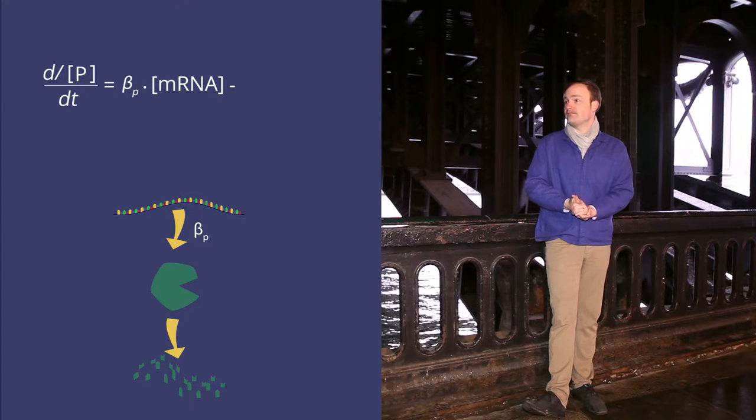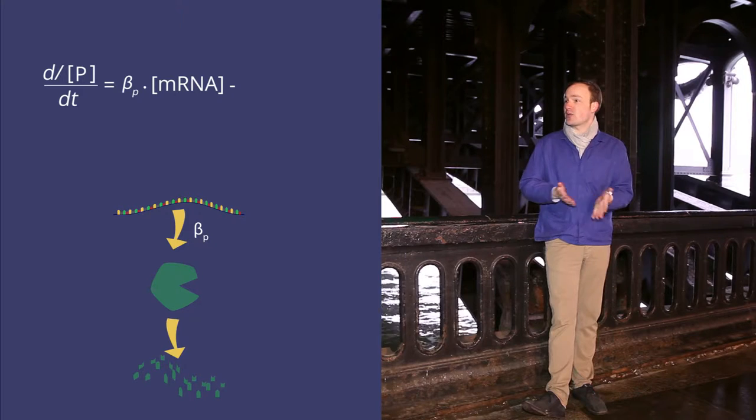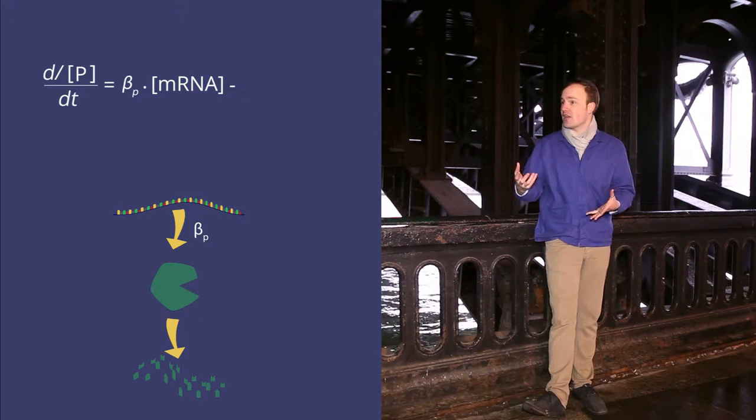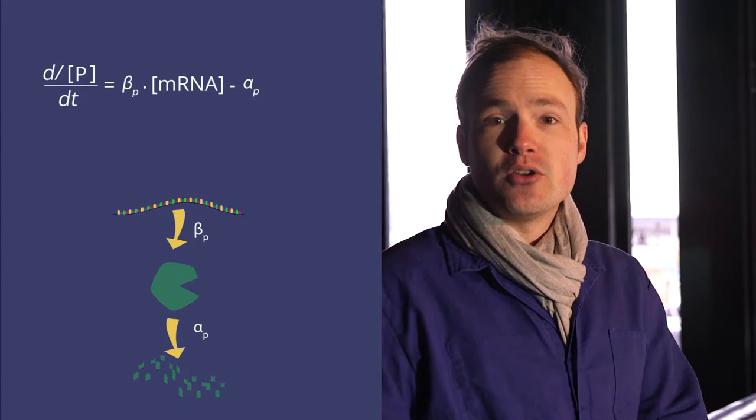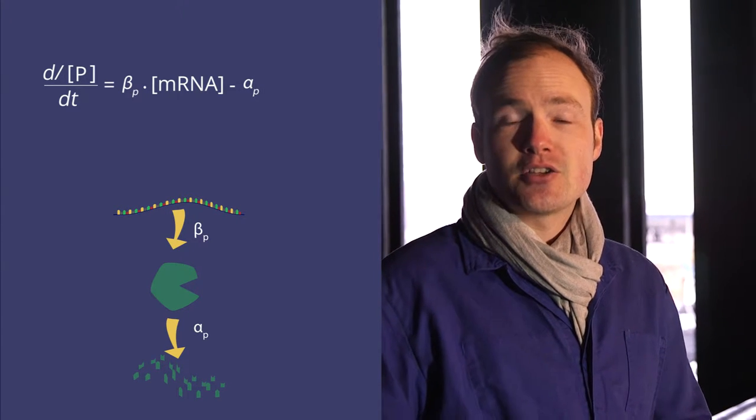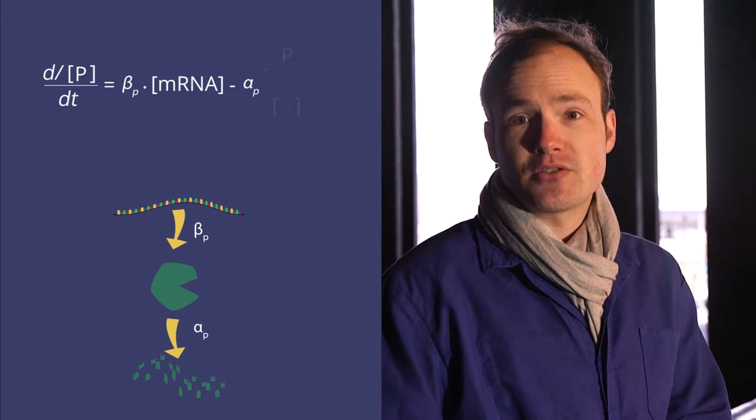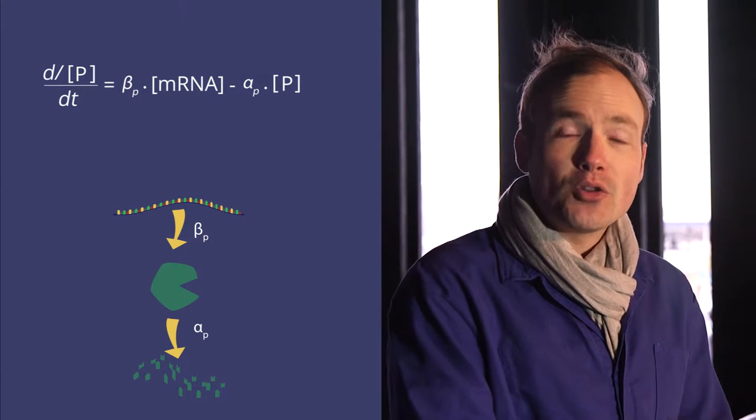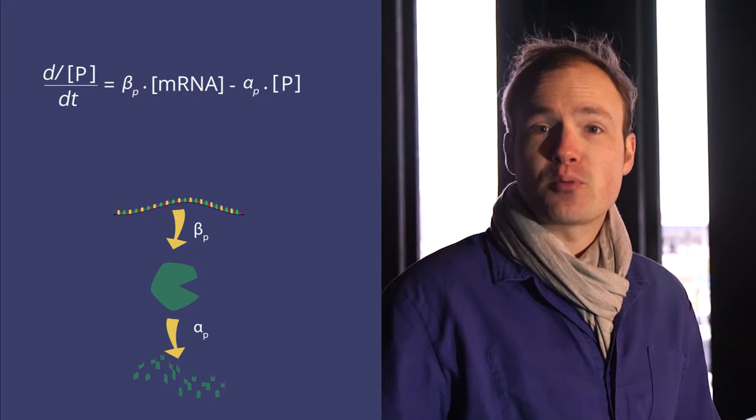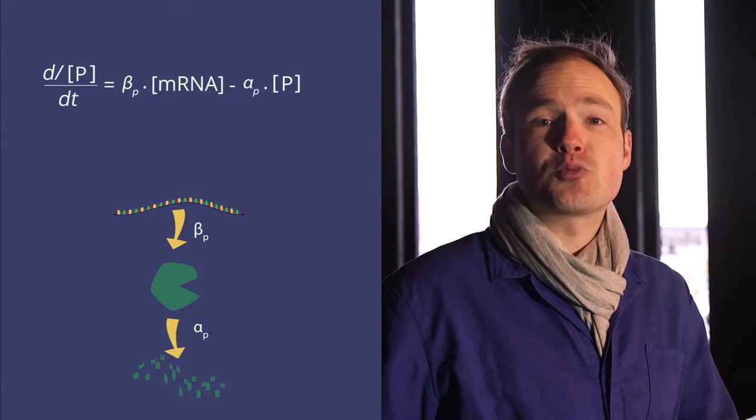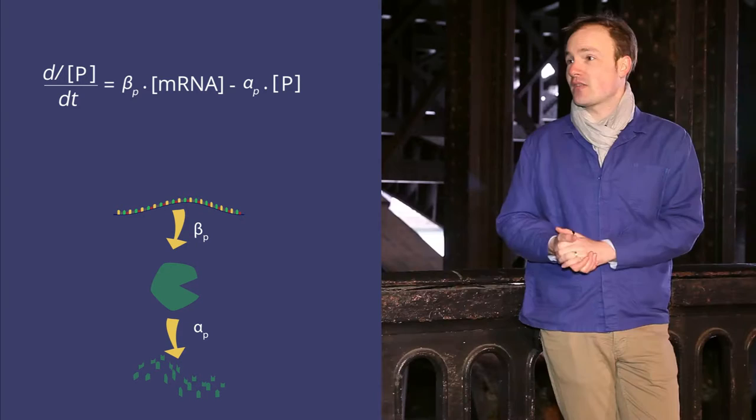Now we need a degradation term. Just like we discussed with mRNA, protein can be degraded by the cell or diluted away when the cell grows. We use the term alpha sub p to represent the loss of proteins from the system, and we multiply this term by p to indicate that the loss of the protein scales with how much protein that you have.